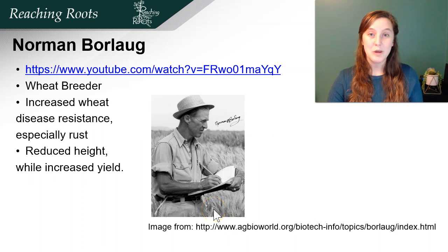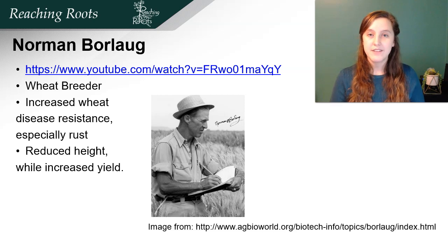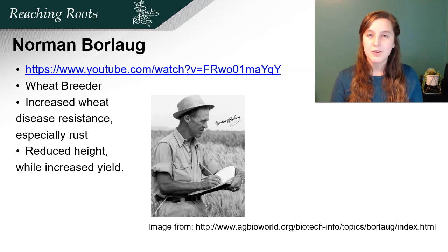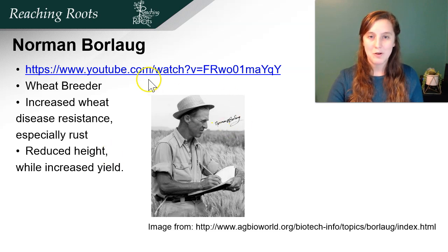Norman Borlaug is a famous wheat breeder who developed wheat that is shorter in stature and resistant to an important wheat disease called stem rust. He saved over a billion people by his work in wheat genetics and won the Nobel Peace Prize for this work. He worked with policy leaders and government agencies in different countries to get his wheat available to the farmers who needed it most. He also did training for young people and farmers alike and is known as a hunger fighter because he increased food security in the world.